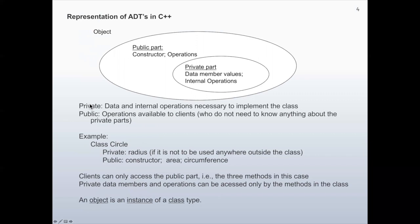The private part holds the data and internal operations necessary to implement the class. The public part corresponds to operations available to clients, who do not need to know anything about the private parts. For example, consider class Circle. In the private part, we have radius. If it is not to be used anywhere outside of the class, then it can be described as private.